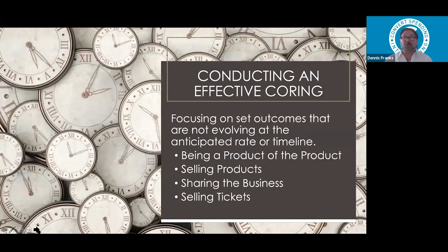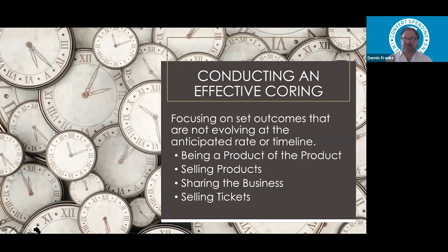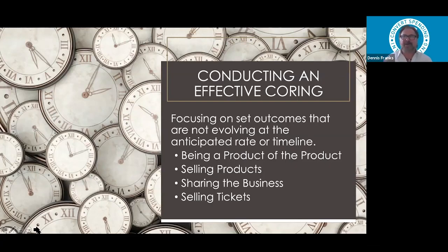We're asking 12 months of commitment from any new partner that comes into the business, so they can be in it long enough doing what we do to see a positive outcome. If I had to conduct an effective coring, I would begin by looking at my organization. Are they doing the fundamental business? Are they being a product of the product? Are they moving toward building their shopping annuity? Are they selling products? Sales are up right now because our health and nutrition products are spectacular, as are our home and business products and our SnapLine.